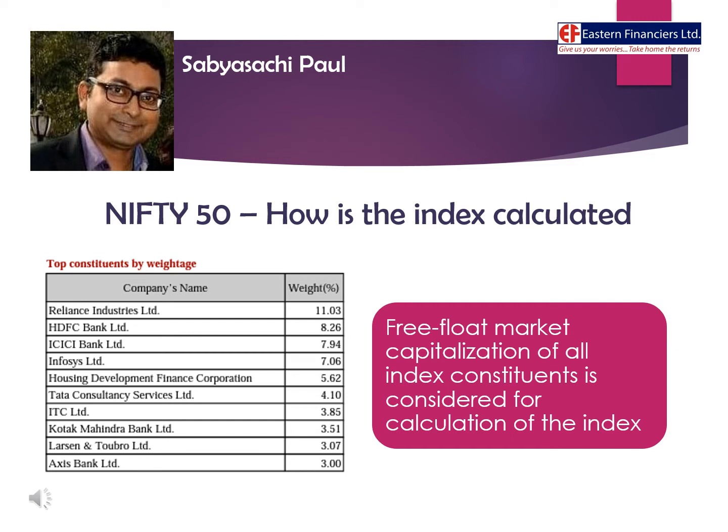For example, if we consider the Nifty 50 index, RIL will have an IWF of 0.6 as only 60% of its market cap accounts for the weightage in the index. While for other companies like ITC, HDFC Bank, or L&T, 100% of weightage is considered because they don't have any promoter holding as such.